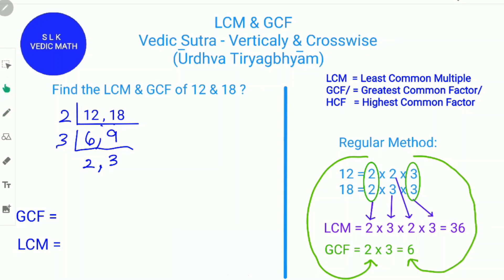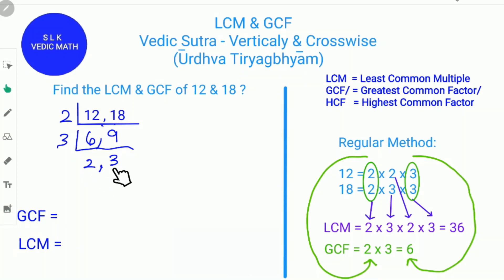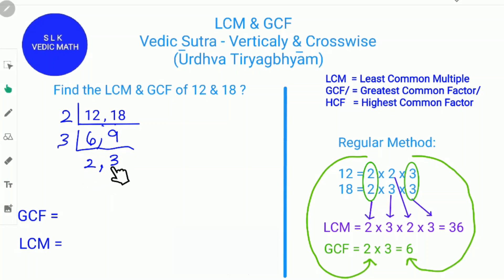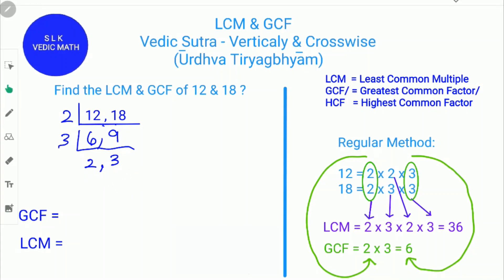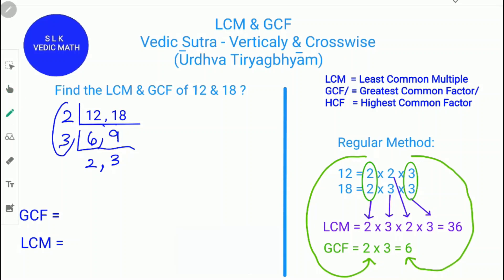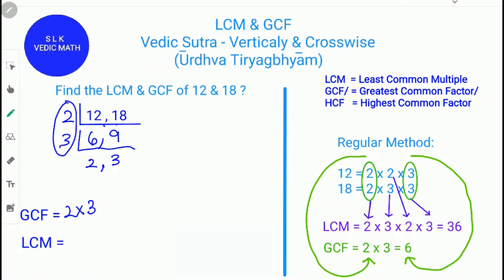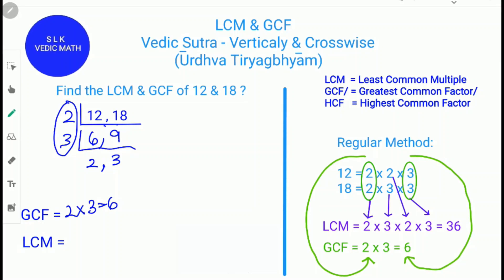3 times 2 is 6, and 3 times 3 is 9. There are no more common factors for 2 and 3 because they are prime numbers. A prime number is a number that can only be multiplied by 1 and itself. So we stop here for the GCF. Vertically multiply 2 and 3: 2 times 3 is 6, so the GCF is 6.